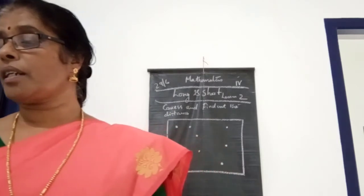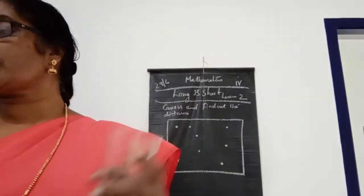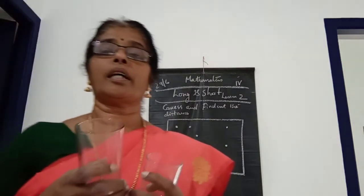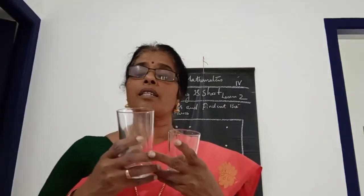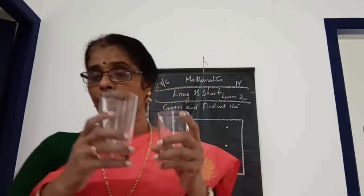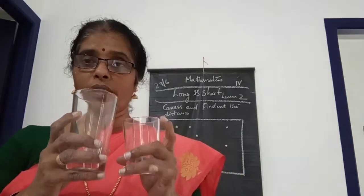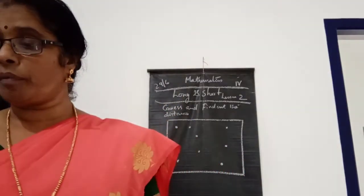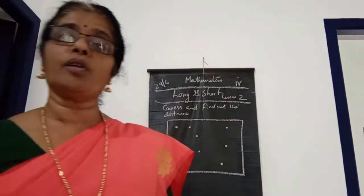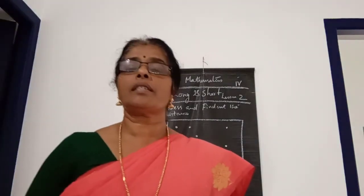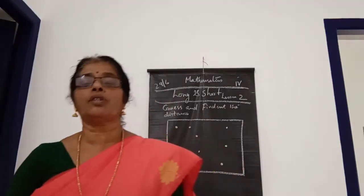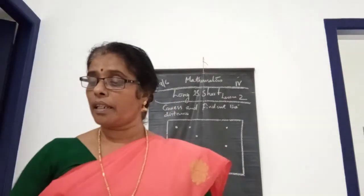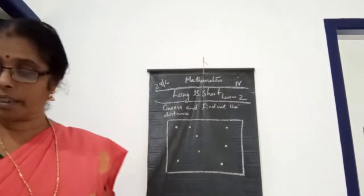These are the objects. You can see here two glasses — one is the bigger one and another one is the short one. So these are the objects and you know which one is the long one and which one is the short one.